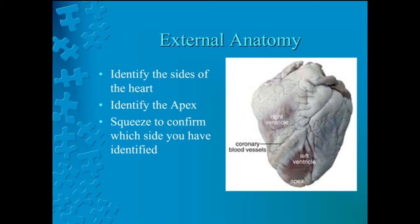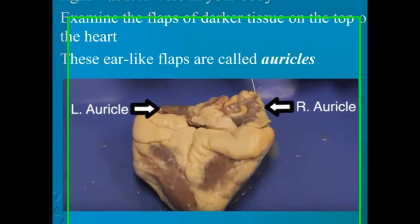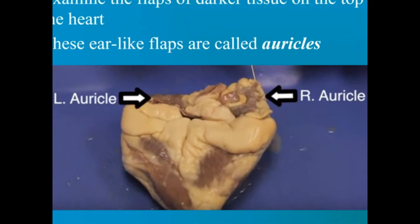Now turn the heart so that the right side is on your right, just as if it were in your body. Examine the flaps of darker tissue on the top of the heart. These ear-like flaps are called auricles. The auricles of the heart are wrinkled portions of each atrium that protrude externally to form a pouch. This structure is sometimes referred to as the atrial appendage. The auricles function as a reservoir for the atria. The term atria is plural for atrium and refers to both the right and left atrium collectively. Pause to locate the auricles.